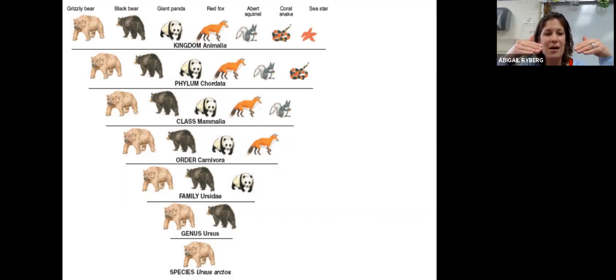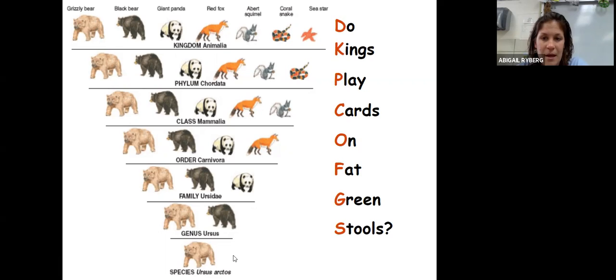Here's an example of starting really broad with Kingdom Animalia, which includes all animals, and then we go down to Phylum Chordata, which is any organism with a spinal cord. Then we narrow it down to Class Mammalia, which includes any mammal. Order Carnivora is any carnivores, so just meat-eaters. Family Ursidae is all the bears. Genus Ursus, and ultimately the species. So ultimately we have just classified the grizzly bear.